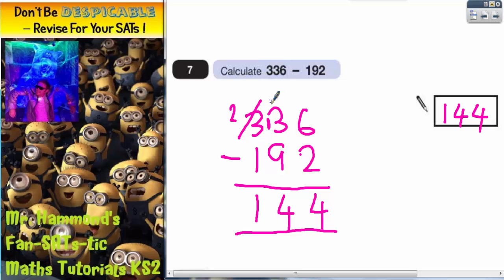So we had to borrow there because 3 take away 9 we couldn't do. And they are going to do that. They're not going to give you a question where no borrowing is required because they want to test whether or not you can actually do the borrowing properly. They're testing whether or not you know which column to borrow from, which we borrowed from the 3 here to make it 2.